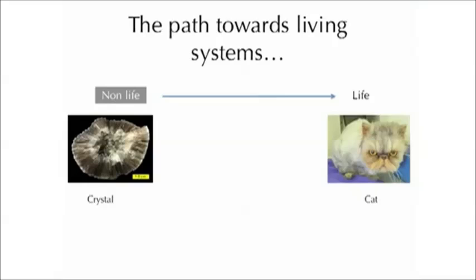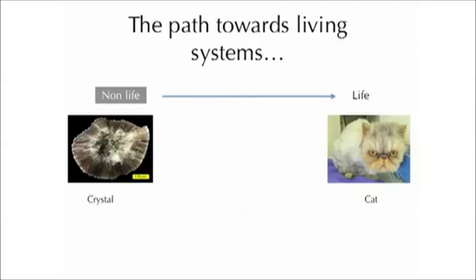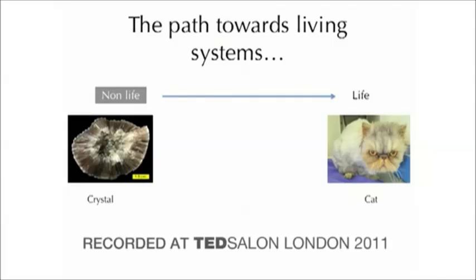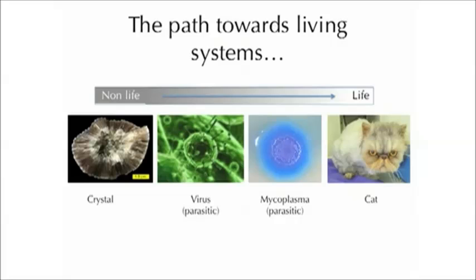Historically, there's been a huge divide between what people consider to be non-living systems on one side and living systems on the other side. So we go from, say, a beautiful and complex crystal as non-life, and a rather beautiful and complex cat on the other side. Over the last 150 years or so, science has blurred this distinction between non-living and living systems, and now we consider that there may be a kind of continuum that exists between the two.